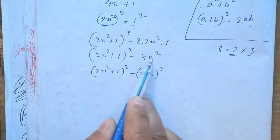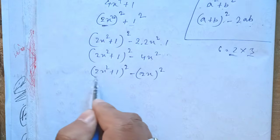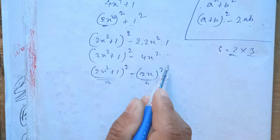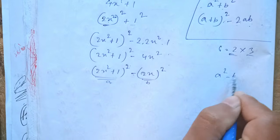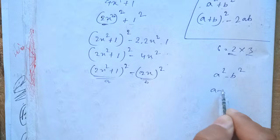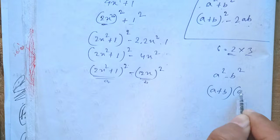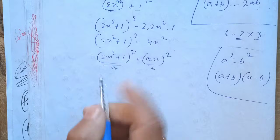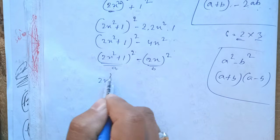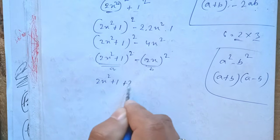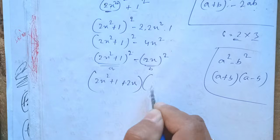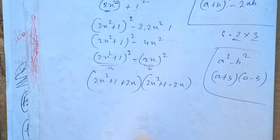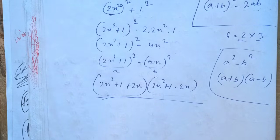Good. So x squared. Now for the next identity: a squared minus b squared equals a plus b whole multiplied by a minus b. Let's apply this identity in the next step.